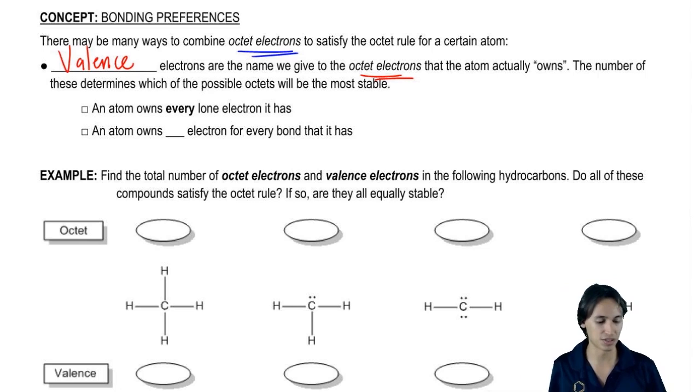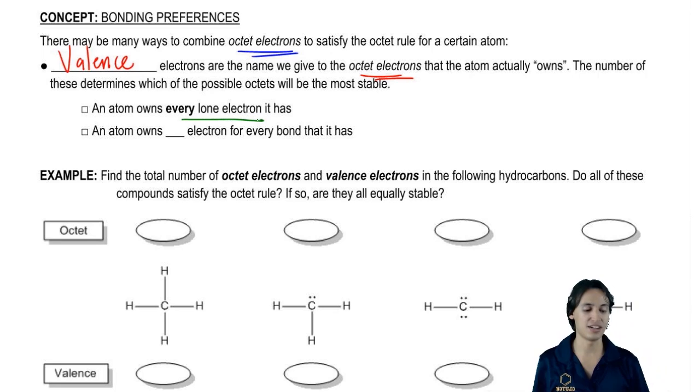What we're going to say is that an atom is going to own every lone electron that it has and it's going to own only one electron for every bond that it has.